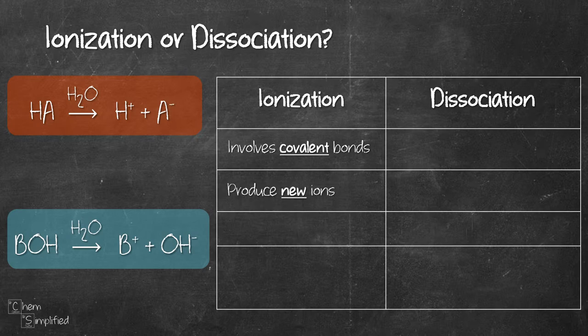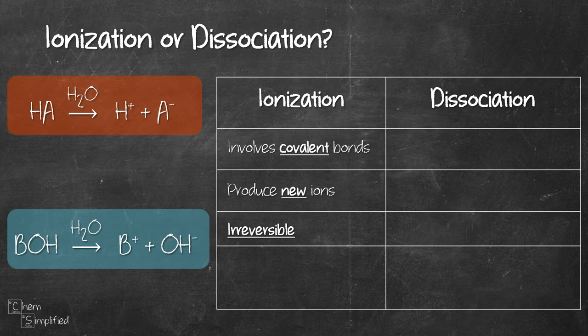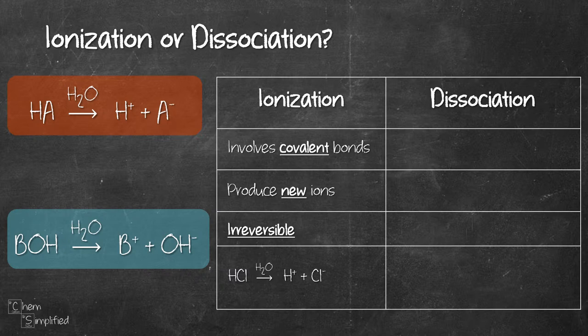This process is not reversible and an example for this is HCl. Note that HCl is a covalent compound where H and Cl atoms share electrons and when dissolved in water, it will produce H plus and Cl minus ions. These ions were not present before.